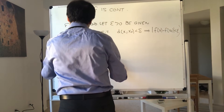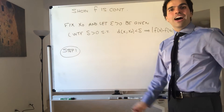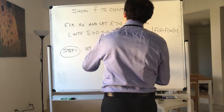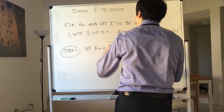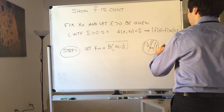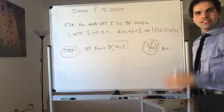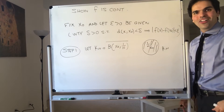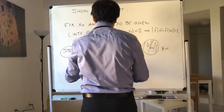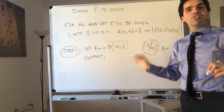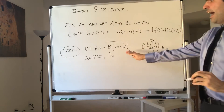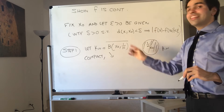Step one. We would like to use the second property somehow, so let's come up with very interesting compact sets. In particular, let K_n be the closed ball centered at x0 with radius 1/n. This is x0, this is the radius 1/n, and K_n is just this whole ball. It is closed because it's a closed ball, and it is bounded because it's a ball. Therefore it is compact, because in R^k compact is the same as closed and bounded. And moreover, notice the radius is getting smaller and smaller as n gets bigger, so the K_n are decreasing. So we have a nested decreasing sequence of compact sets, therefore we can use property 2.